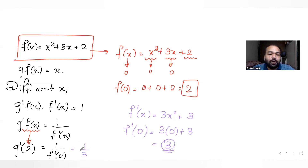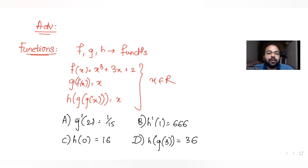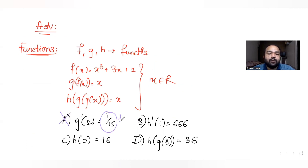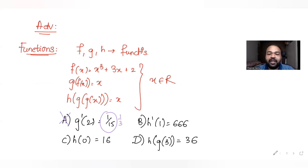f'(x) = 3x² + 3, so f'(0) = 3. Therefore g'(2) = 1/3. The first option says g'(2) = 1/15, which is not correct because I got g'(2) = 1/3. So option A is incorrect.